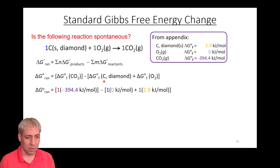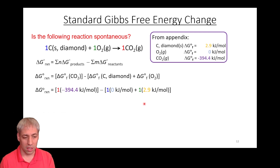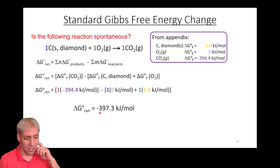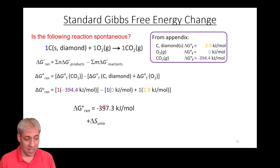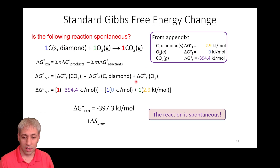The stoichiometry is one to one to one, which makes the math easy. The delta G of formation of CO2 is negative 394 kJ/mol. O2 is in its elemental form, so its Gibbs free energy of formation is zero. Plugging in, the delta G for this reaction is negative 397.3 kilojoules per mole. Since delta G is negative, delta S of the universe is positive — the reaction is spontaneous. Diamond spontaneously combines with oxygen to give CO2, though it doesn't tell you how fast.